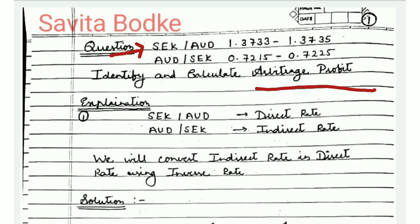In the question, you are given the currency pair SEK/AUD. SEK is the Swedish Krona, the currency of Sweden, and AUD is the Australian Dollar, which everyone is already aware of. The bid rate for this pair is 1.3733 and the ask rate is 1.3735.